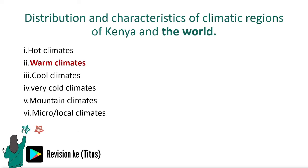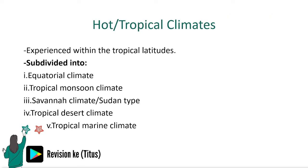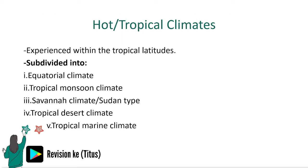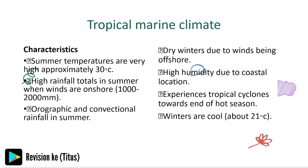To summarize the hot climates: under this category we have the equatorial climate, the tropical monsoon climate, the savannah or Sudan type, the tropical desert climate, and the tropical marine climate.